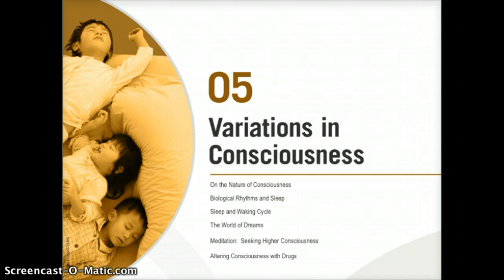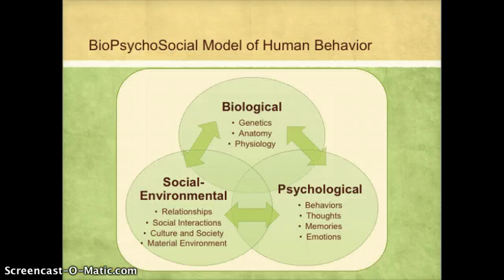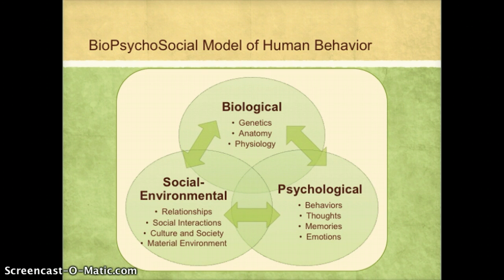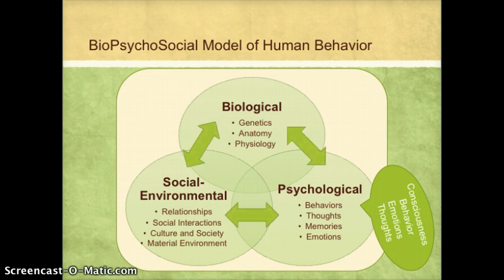Variations in Consciousness. In this chapter, we will continue to look at the biopsychosocial model of human behavior, but we will look at the interaction between biological, psychological, and socio-environmental factors. Psychological factors include consciousness, behavior, emotions, and thoughts.